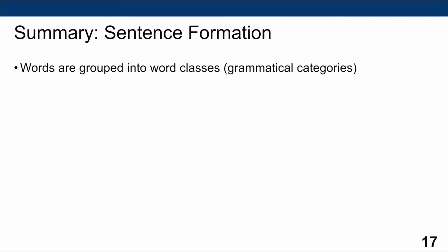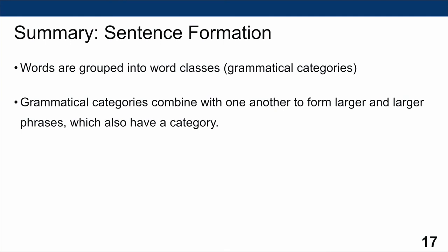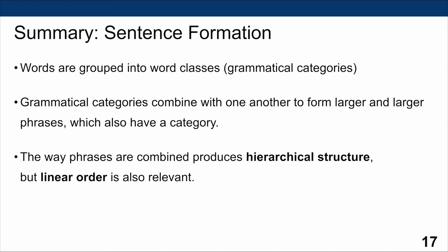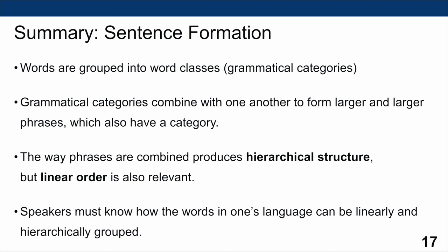To sum up: speakers must know about both linear and hierarchical structure to form sentences. We've seen that words are grouped into grammatical categories, which can also apply to larger phrases. Grammatical categories combine with one another to form ever larger phrases, also with grammatical categories. Phrase structure rules produce hierarchical and linear structure simultaneously, meaning speakers must know how words in their language can be combined both linearly and grouped hierarchically.